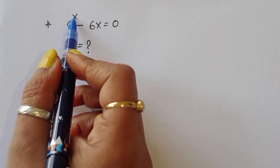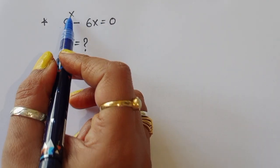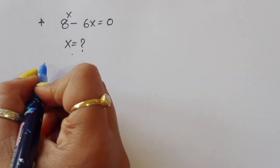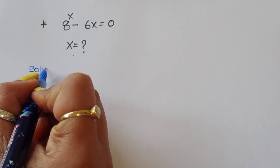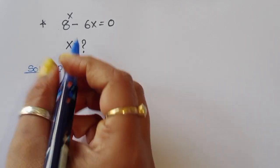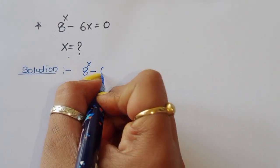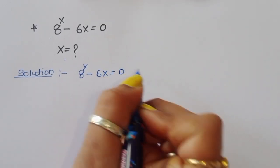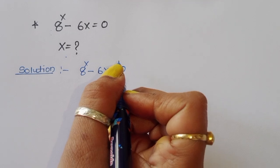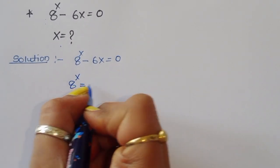The question is: given 8 power x minus 6x is equal to 0, we have to find out the value of x. Let's see the solution. We have 8 power x minus 6x equals 0, and we can write this as 8 power x is equal to 6x.